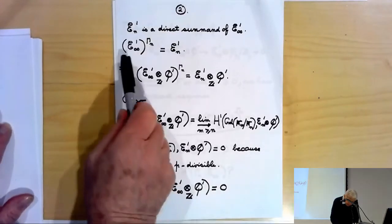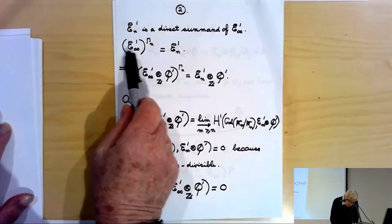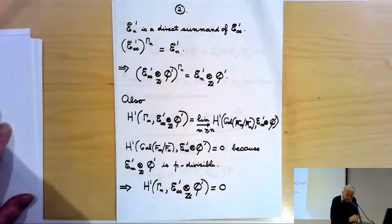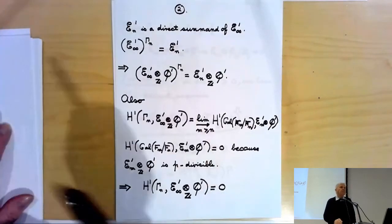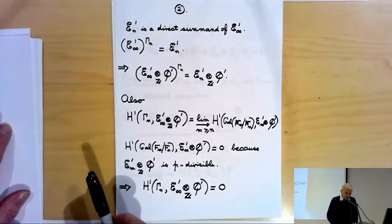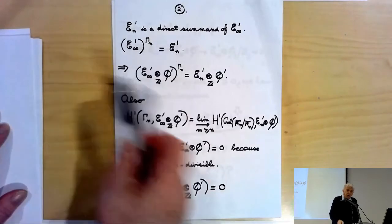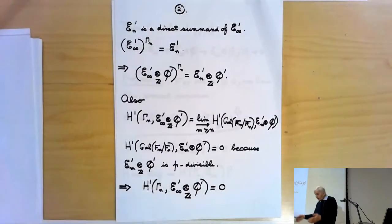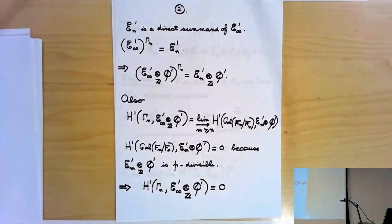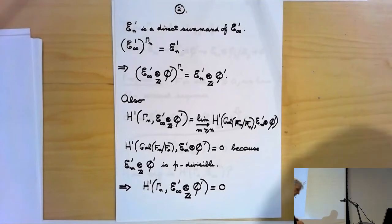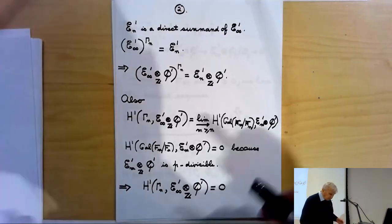Moreover, the E∞' fixed by Γ_n is the same as E_n'. This is essentially by Galois theory — it's obvious for E_n' and then follows for the curly E_n' because the cohomology of the units is trivial.